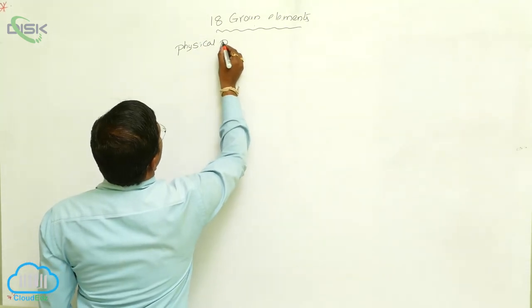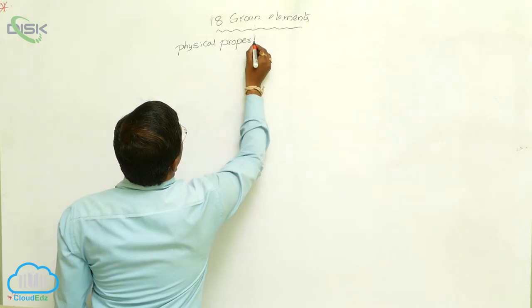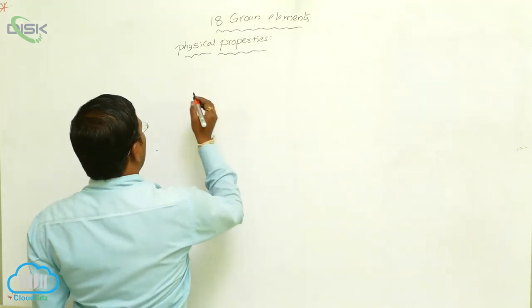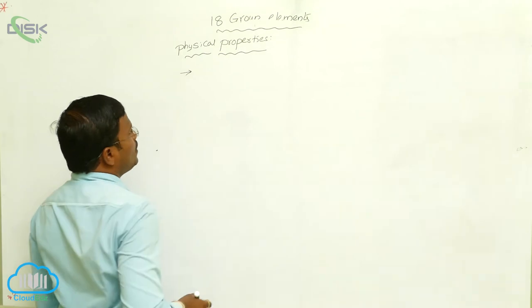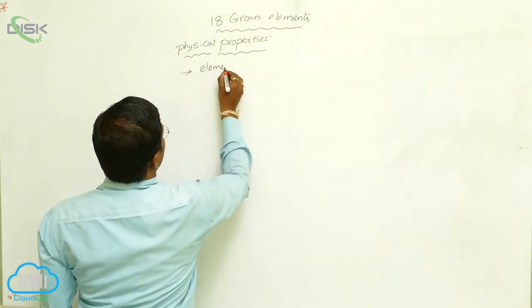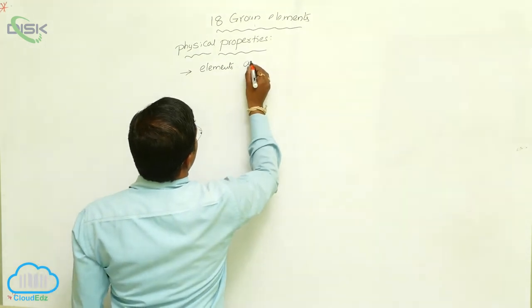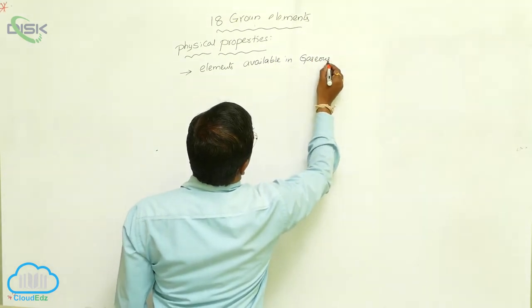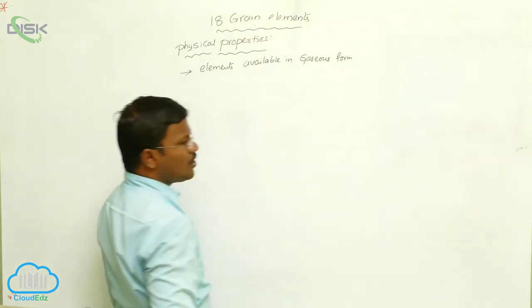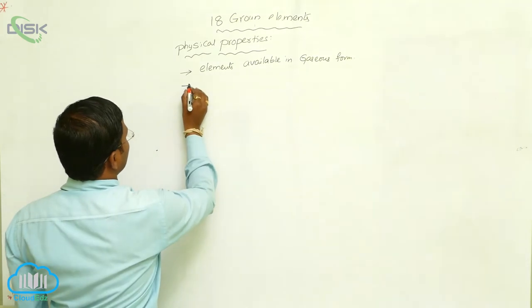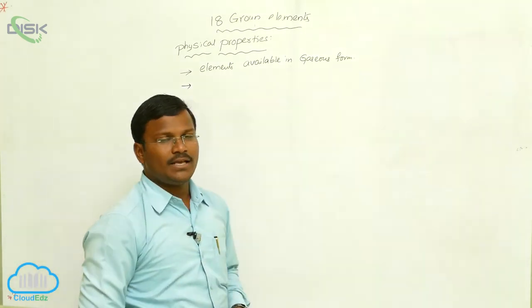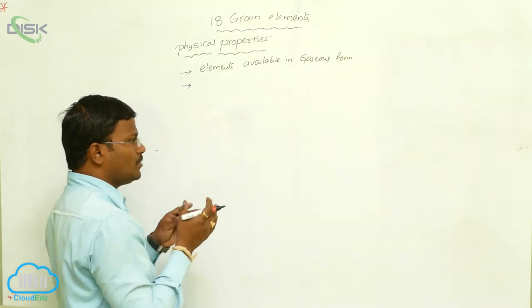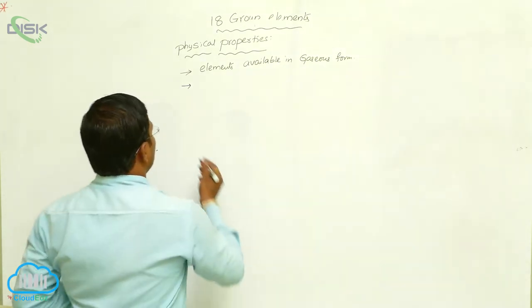We are learning about the physical properties of 18th group elements. All these elements are available in gaseous form, except Radon. Radon is a radioactive element, and it is also produced from the nuclear fusion of Radium.